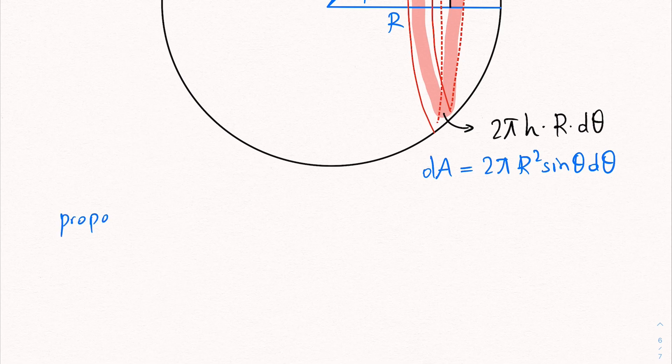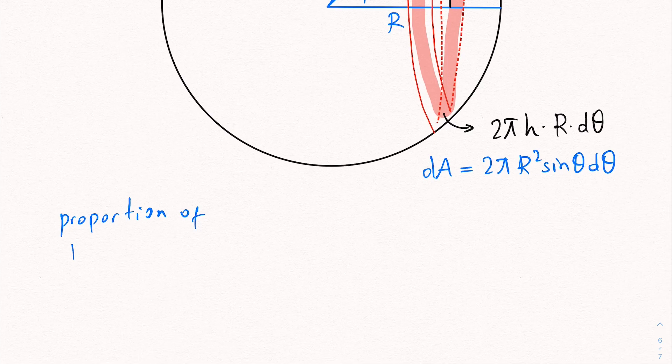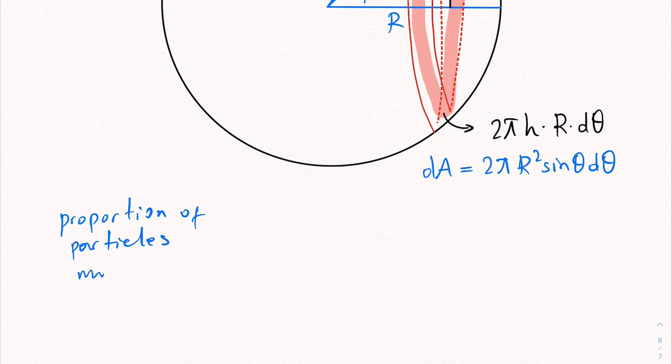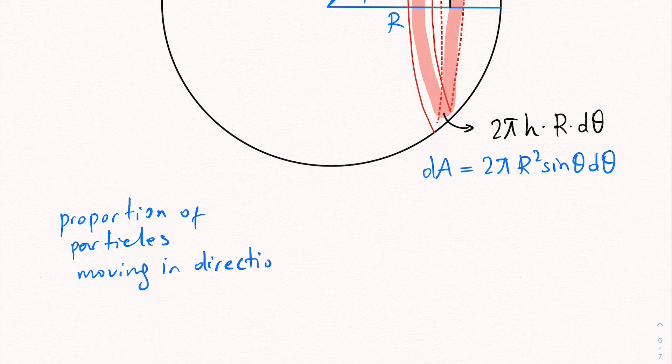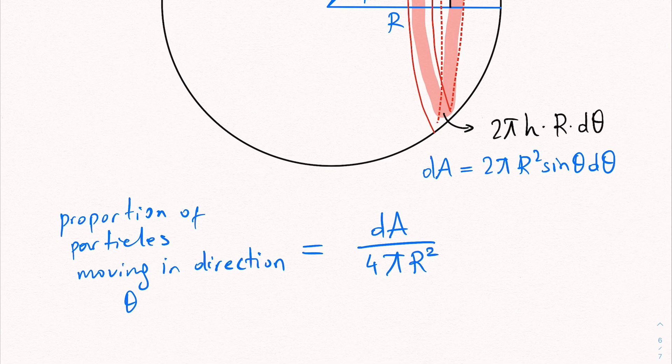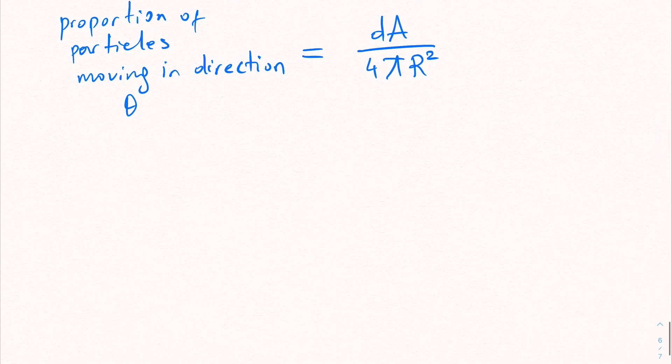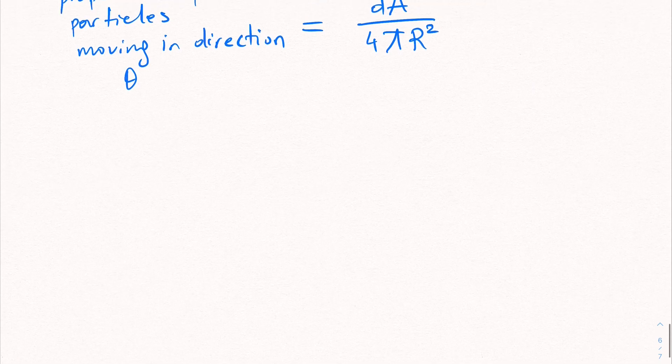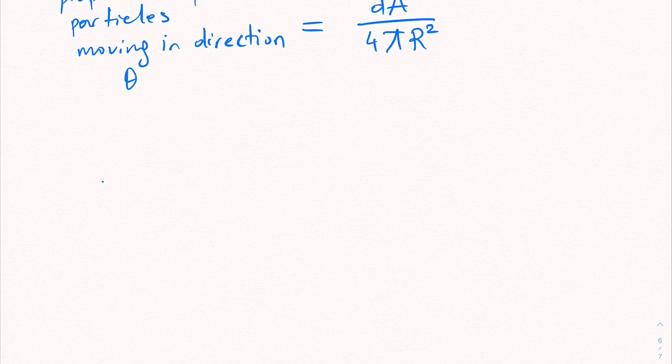Now why this is important? Because it's going to give us the number of particles moving in the direction theta. So the proportion of particles moving in direction theta is going to be this tiny area divided by the whole area of the sphere, which is 4 pi r squared. Why do we need this? Because as we have discovered earlier, we basically can know what happens when we have velocity v.